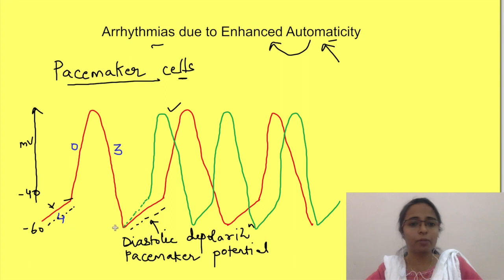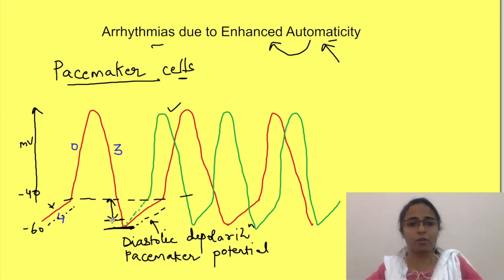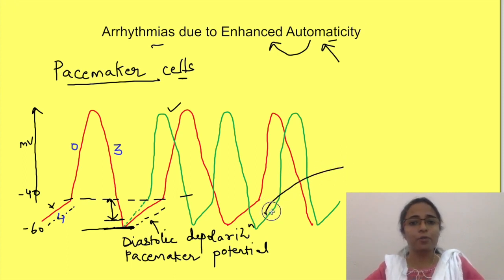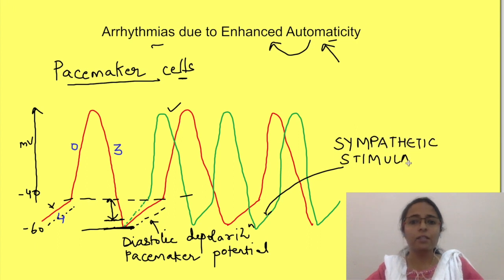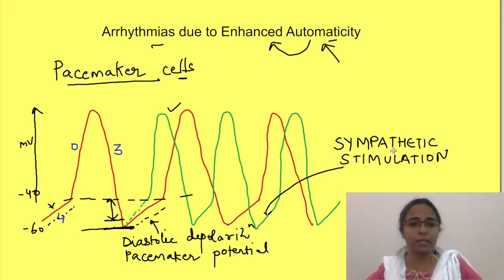Also, if the maximum negative potential is less — that means it is shifted a little towards positive — it will cause the slope to reach the threshold faster, causing an increase in the frequency of action potentials. Now this slope can increase due to stimulation of the sympathetic system. This occurs normally as well — this is the mechanism to increase heart rate — but if it increases too much, it will lead to arrhythmias.